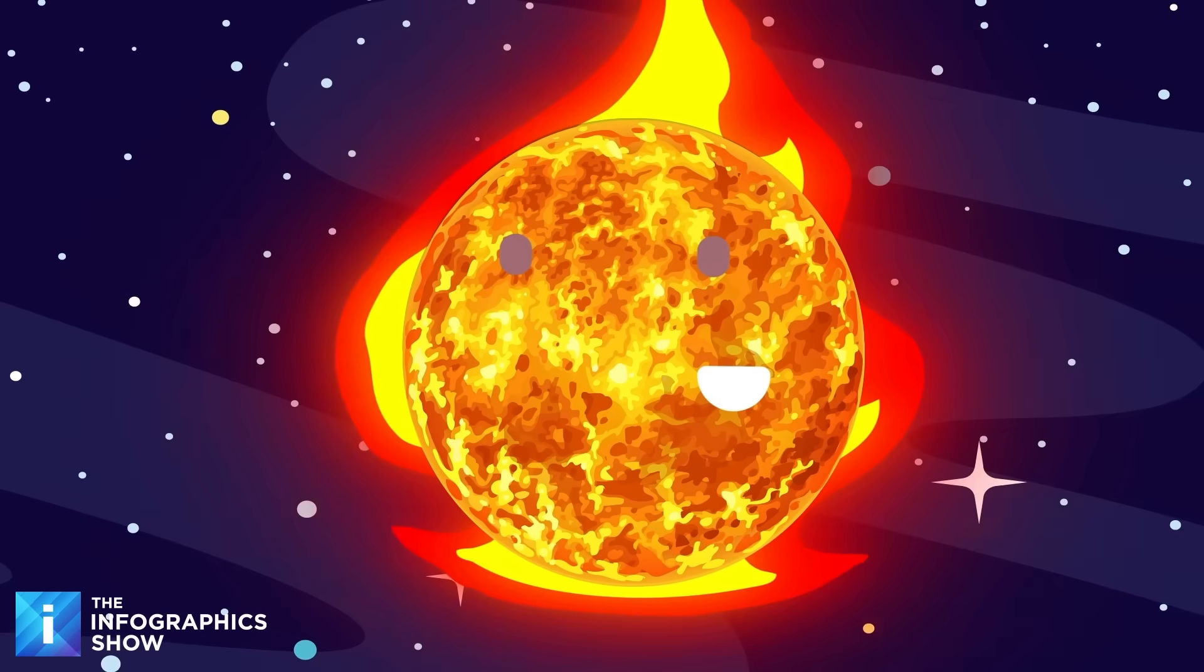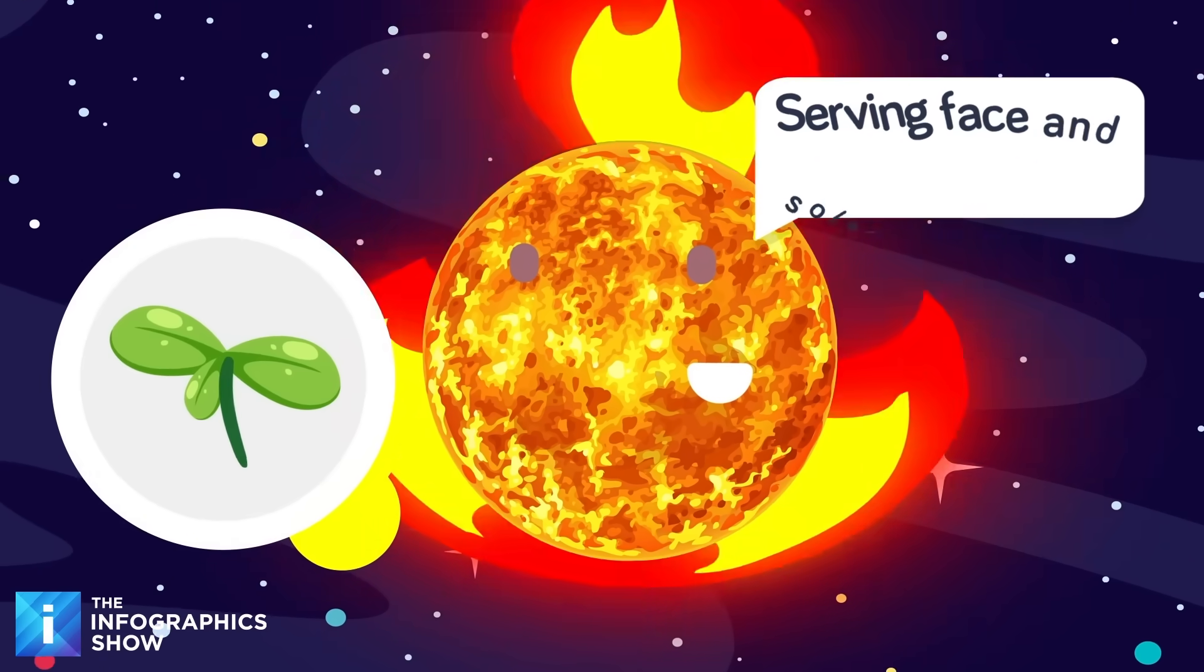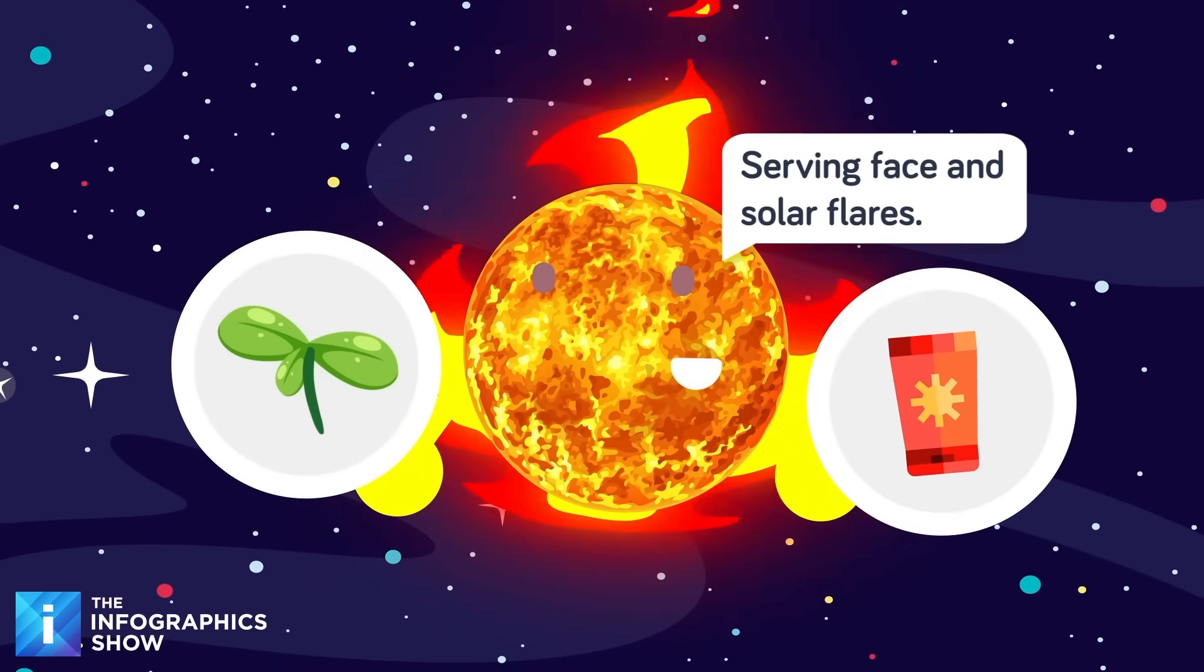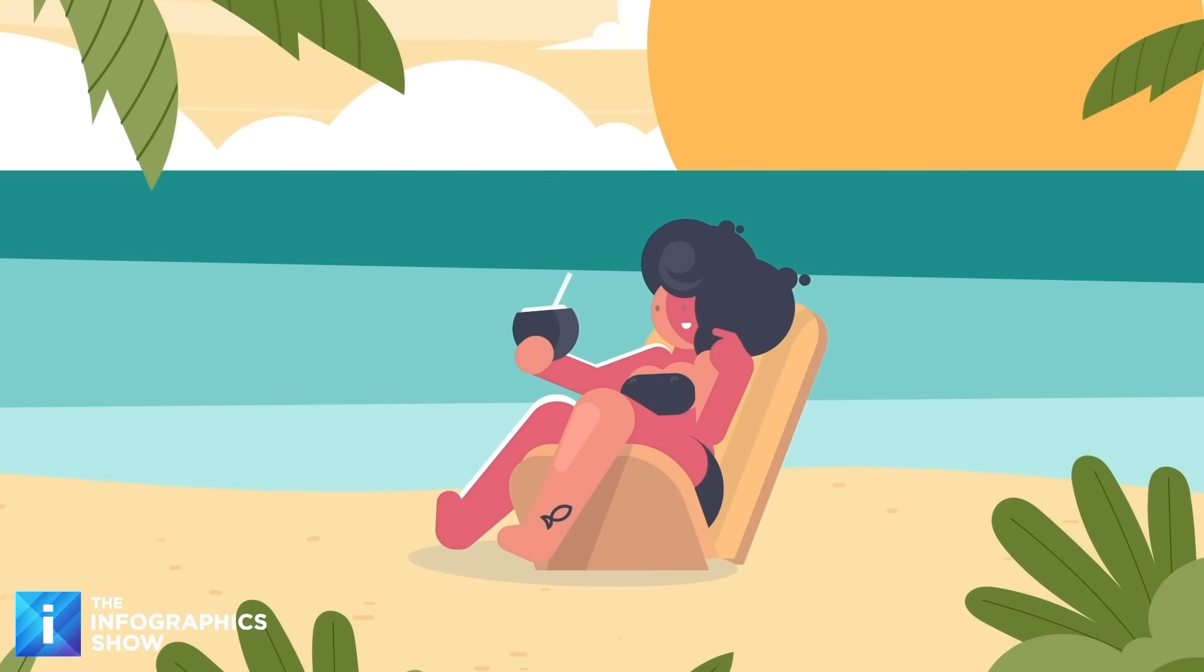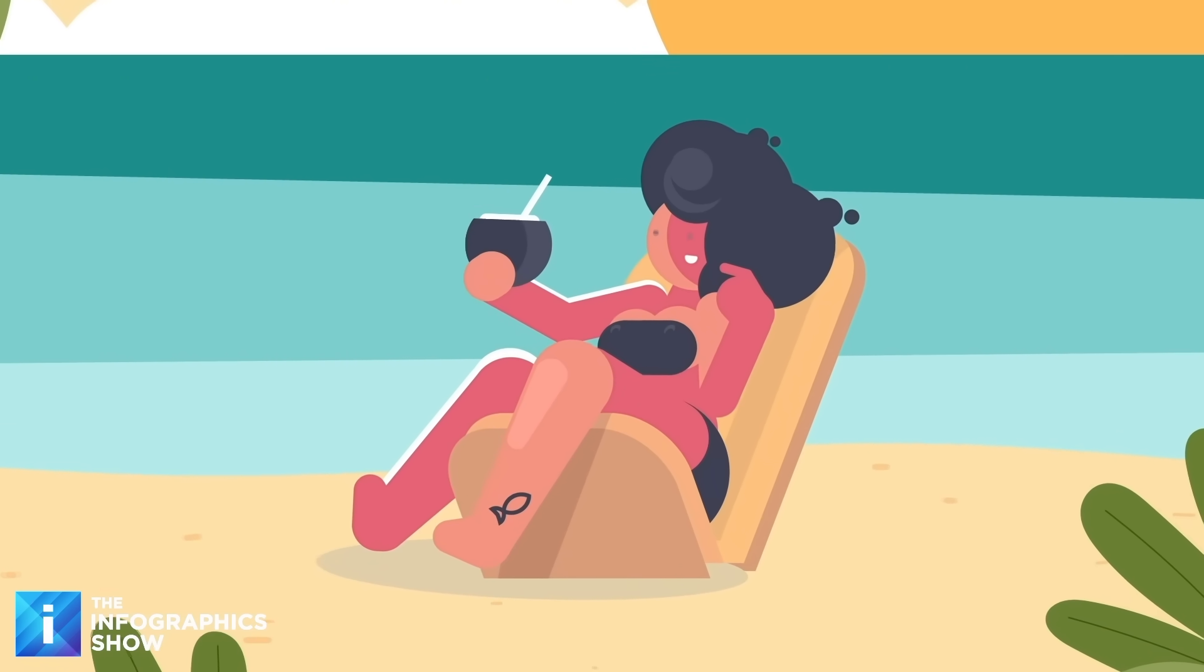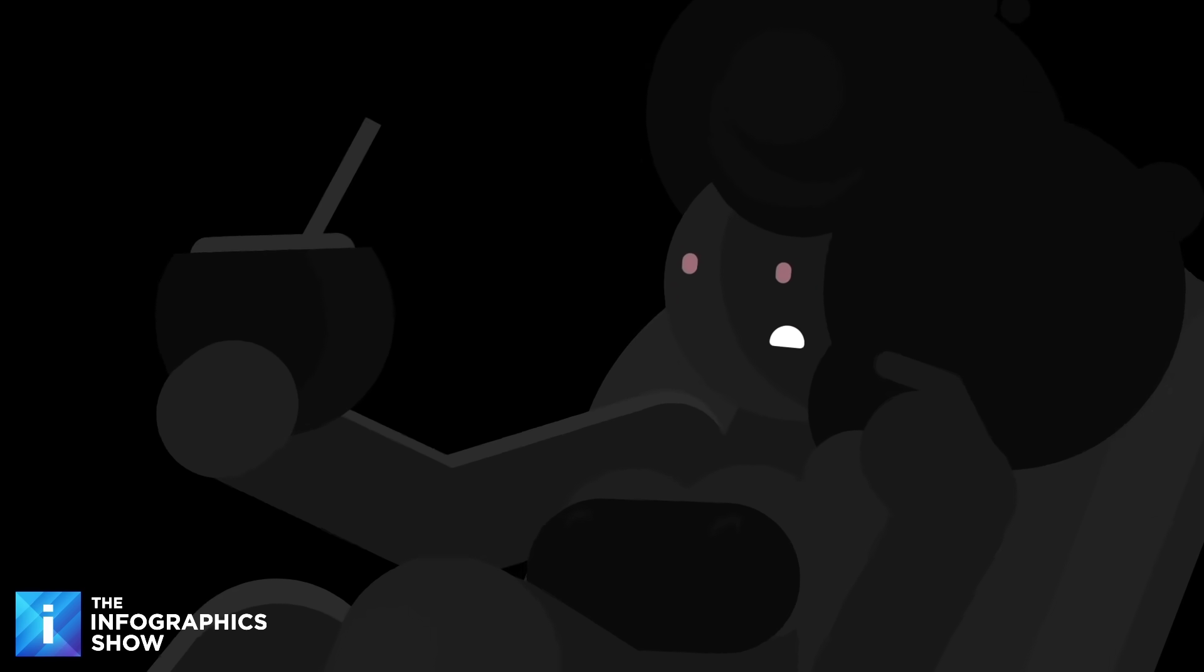In space, there are stars way bigger than our own sun, that flaming furnace responsible for both life on our Earth and overpriced sunblock. Sunburn is a sacrifice we can live with, though, because if our own sun stopped burning, everything would get very dark and we would have a really difficult time down here.